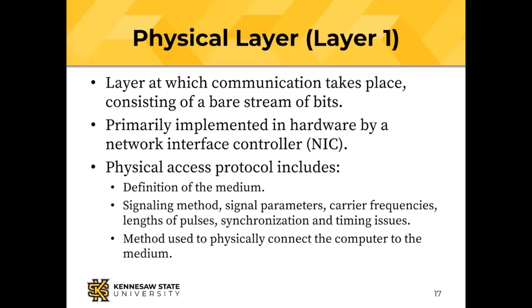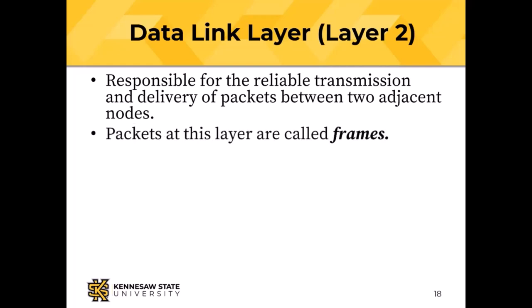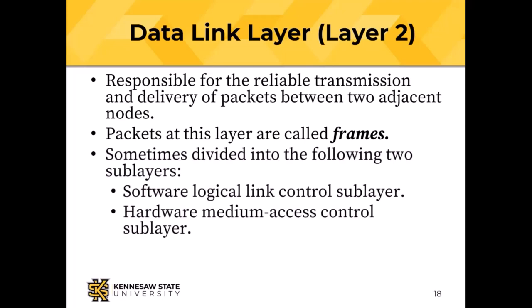The data link layer is responsible for reliable transmission between two adjacent nodes — nodes that are directly connected, whether 20 miles apart via microwave or 10 feet apart via Ethernet cable. At this layer, packets are called frames. We sometimes think about a logical link sublayer in software and a medium access control (MAC) sublayer in hardware, but often you can treat it as one data link layer.